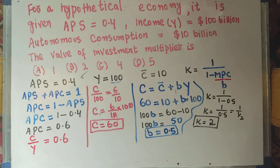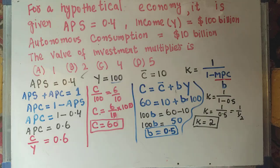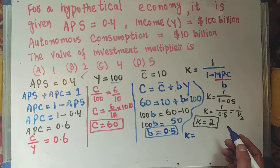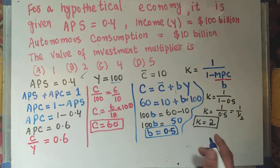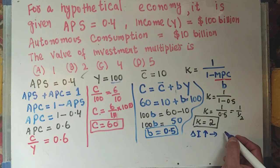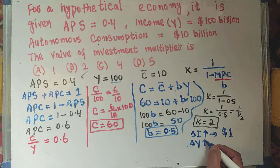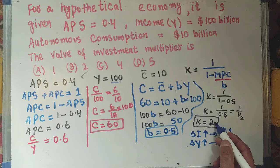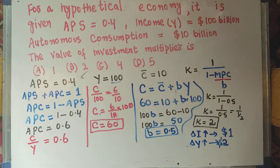The correct answer is 2. How do we interpret this? The investment multiplier shows how much additional income is generated in an economy from an initial investment. If K = 2, it implies that if investment increases by one billion dollars, then income in the economy will increase by 2 billion dollars. I hope this video was clear and helpful. Thank you.